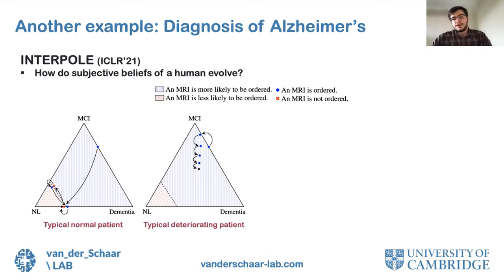As the actions, we consider the decision making problem of ordering versus not ordering an MRI test, which while often informative of Alzheimer's, is financially costly. In the figures, we also plot the decision boundary between these two actions. The first two figures show typical patients who fit well to the overall learned policy by INTERPOL.